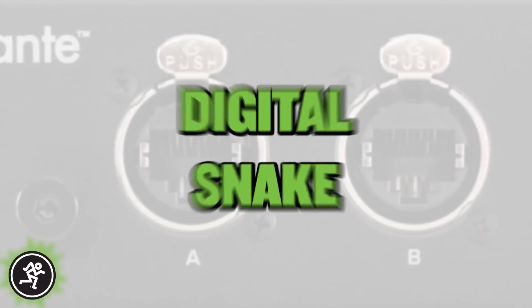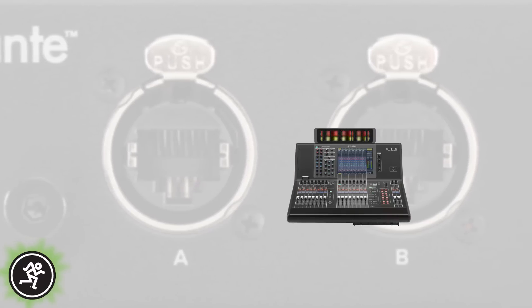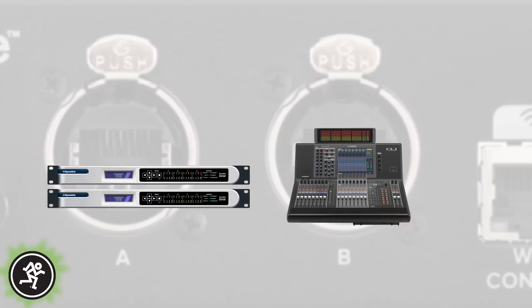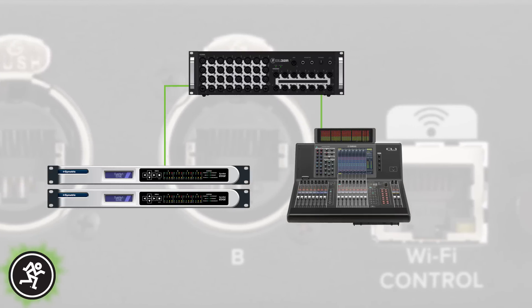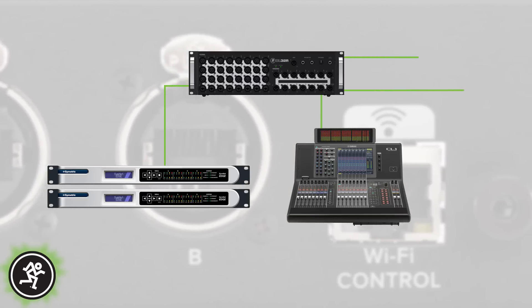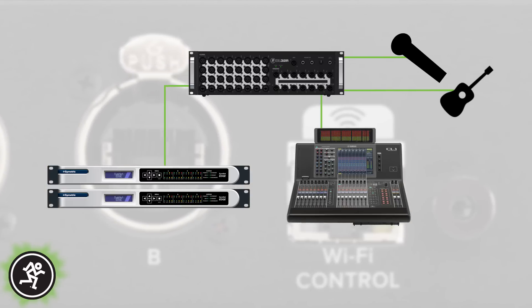Digital Snake: a DL32R can also act as a digital snake for any other Dante-enabled console, providing any venue a clean and flexible way to route multi-channel audio between touring front of house consoles and the stage. Visiting engineers can now route audio straight into the system DSP via the onstage DL32R, without the need for separate snake runs. This also allows the DL32R to be used for local opening acts, eliminating the need for an additional front of house or monitor console.